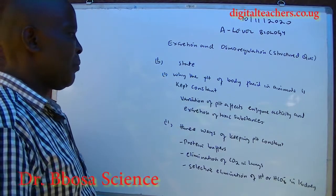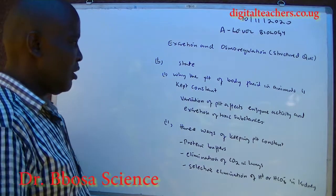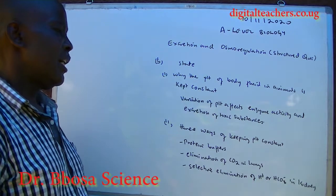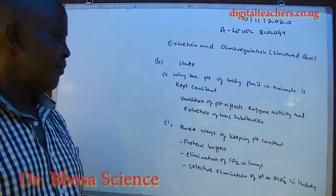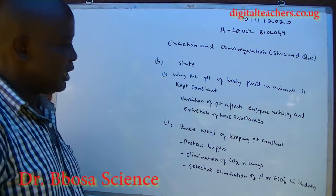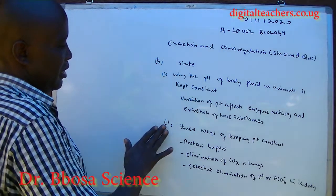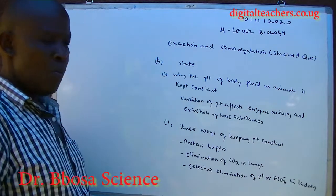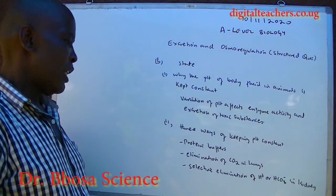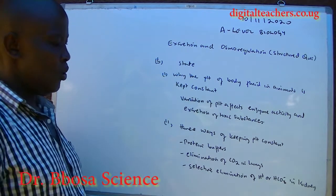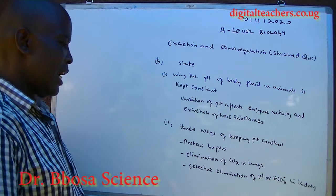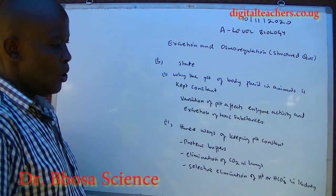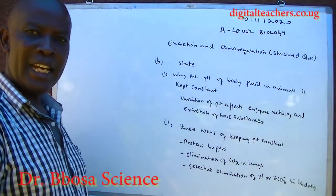State why the pH of body fluid in the animal is kept constant: because variation of pH affects enzyme activity and excretion of toxic substances. State three ways of keeping pH constant: by the protein buffer system, elimination of carbon dioxide in the lungs, and selective elimination of hydrogen ions or hydrogen carbonate ions in the kidney.